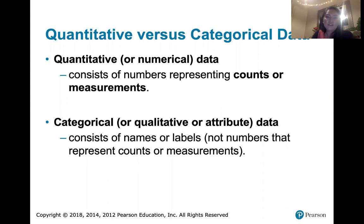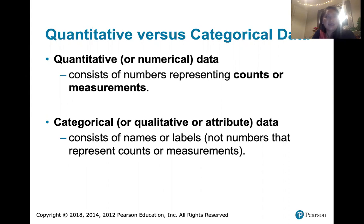Another example of a number that represents categorical data would be your student ID. Your student ID is again an identifier that's associated with you, and so that would be categorical data.